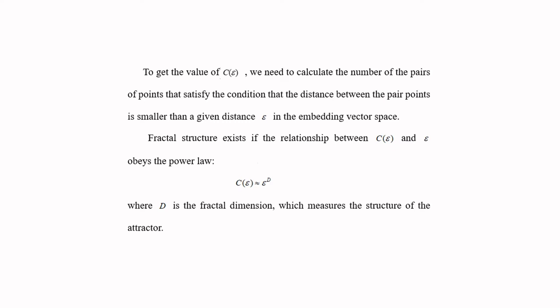This fractal structure exists if the relationship between C and epsilon obeys the power law. The power law is expressed by this formula, where D is the fractal dimension which measures the structure of the attractor.